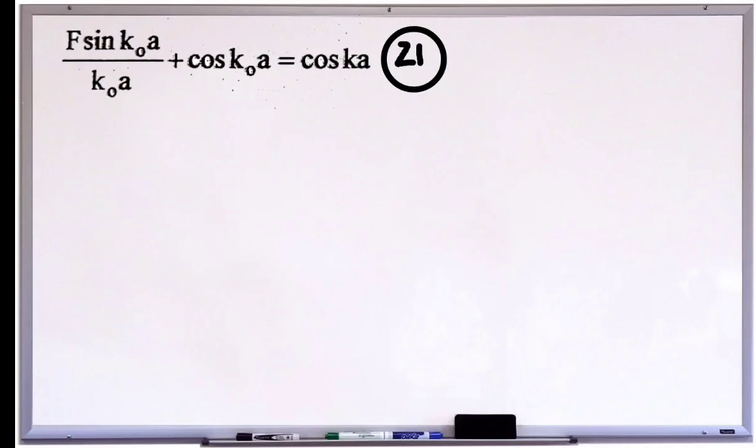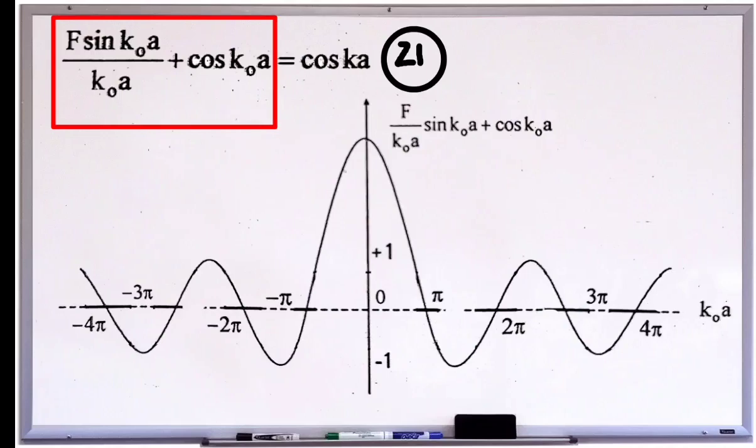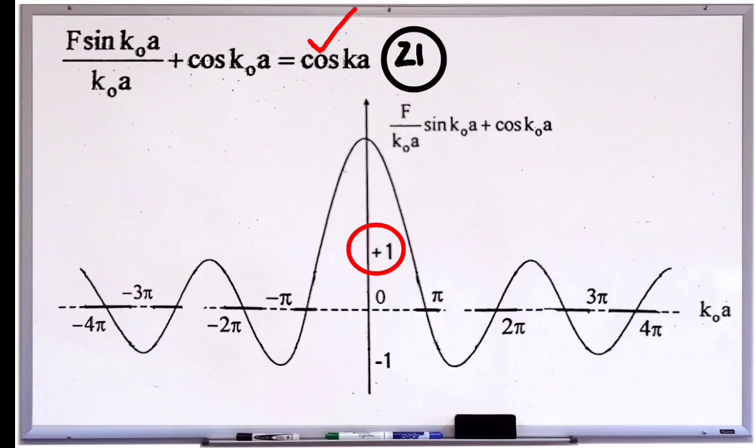So this equation is very important. If we plot the LHS part of the equation with respect to k₀a, you will get a graph like this one for the positive values of k₀a and negative values of k₀a. But all these values of this term not acceptable because according to the equation 21, LHS is equal to cos k. That means it should match with the right hand side. We know that the maximum value of cos k is plus 1 and the minimum value of cos k is minus 1.